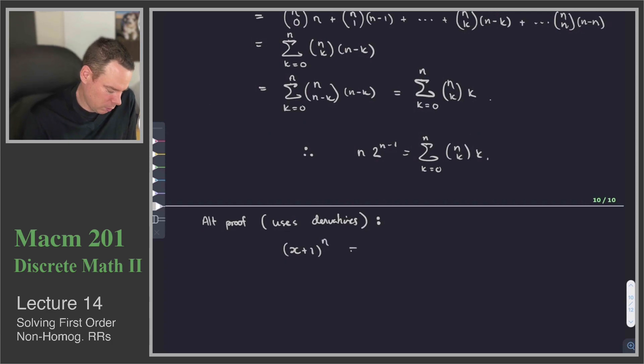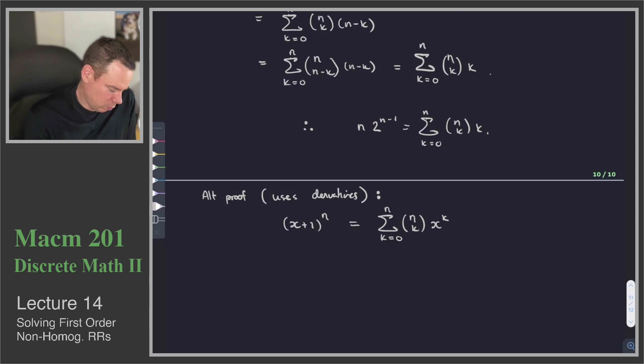What do we start with? Well, I'm going to start with x plus 1 to the n. So by the binomial theorem, we know that this is the sum of n choose k x to the k, where k goes from 0 to n. And now what we'll do is we'll just differentiate this on the left-hand side, we'll use the power rule. On the right-hand side, we'll use the power rule, but it's a polynomial, so we just differentiate term by term.